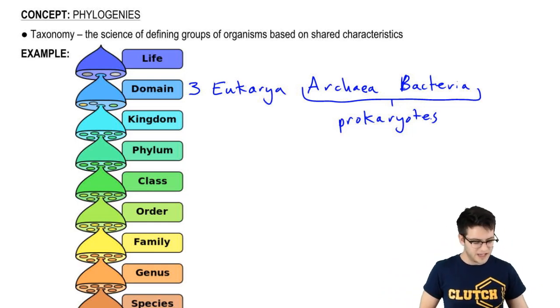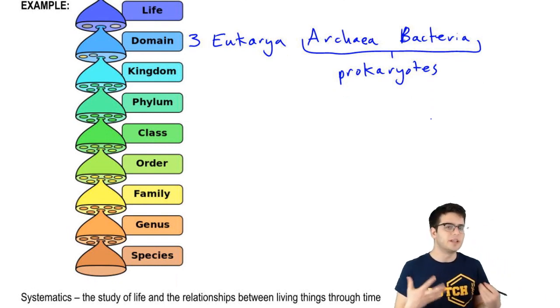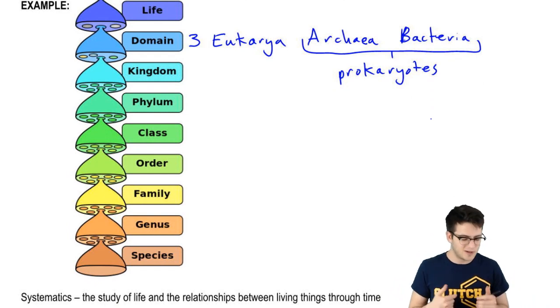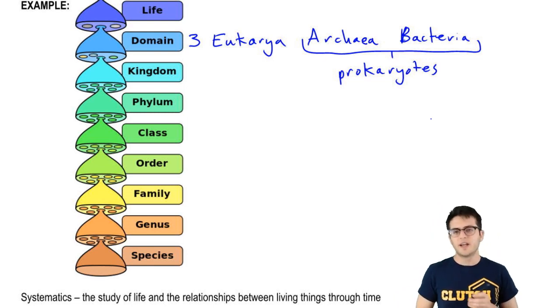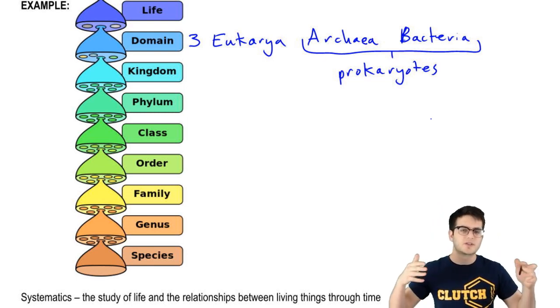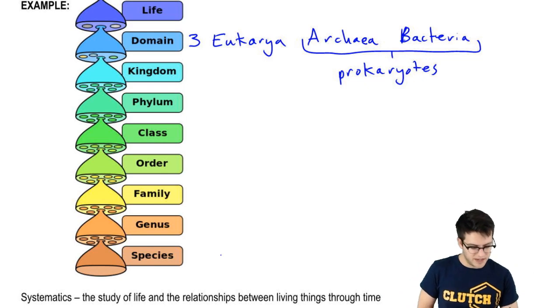Before we diverge from taxonomy, I just want to talk about species, because that's really where our conversation is going to take us. We're going to be talking about species a lot as we talk about evolution. You and I, we are part of the same species. That's kind of the smallest grouping that you get in taxonomy.